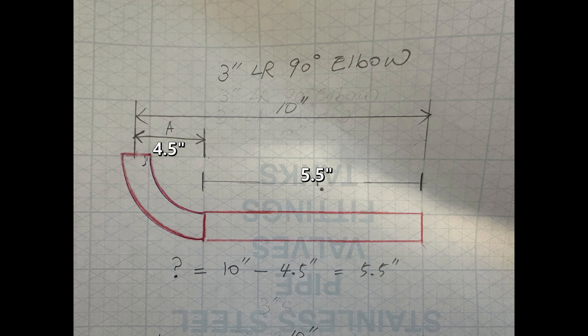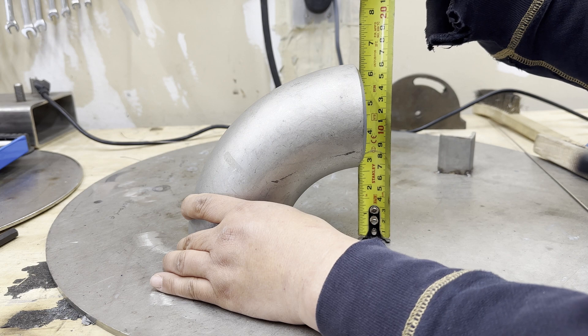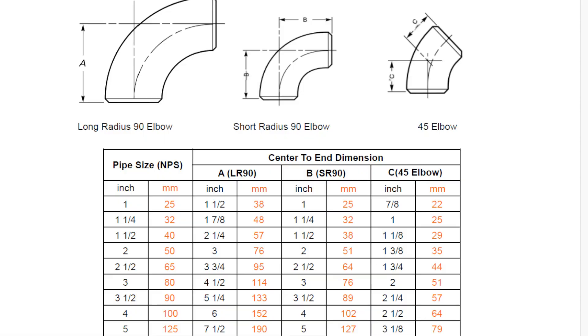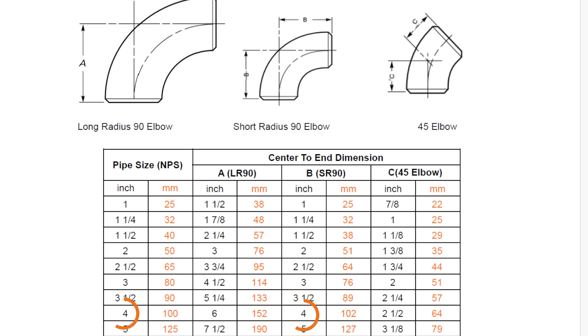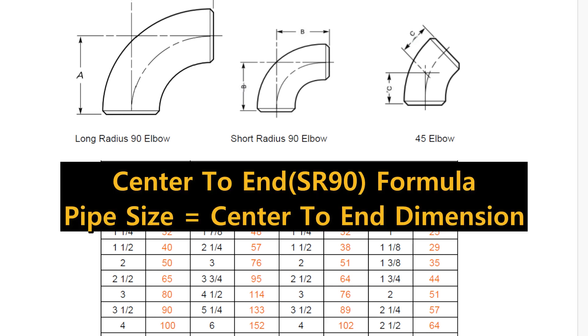Let's do the short radius elbow. The actual measurement method is the same as the long radius elbow. Let's look at the chart. 1-inch pipe is 1-inch, 2-inch pipe is 2-inch, 3-inch pipe is 3-inch, 4-inch pipe is 4-inch. In case of short radius elbow, the center-to-end dimension is the same as the pipe size.